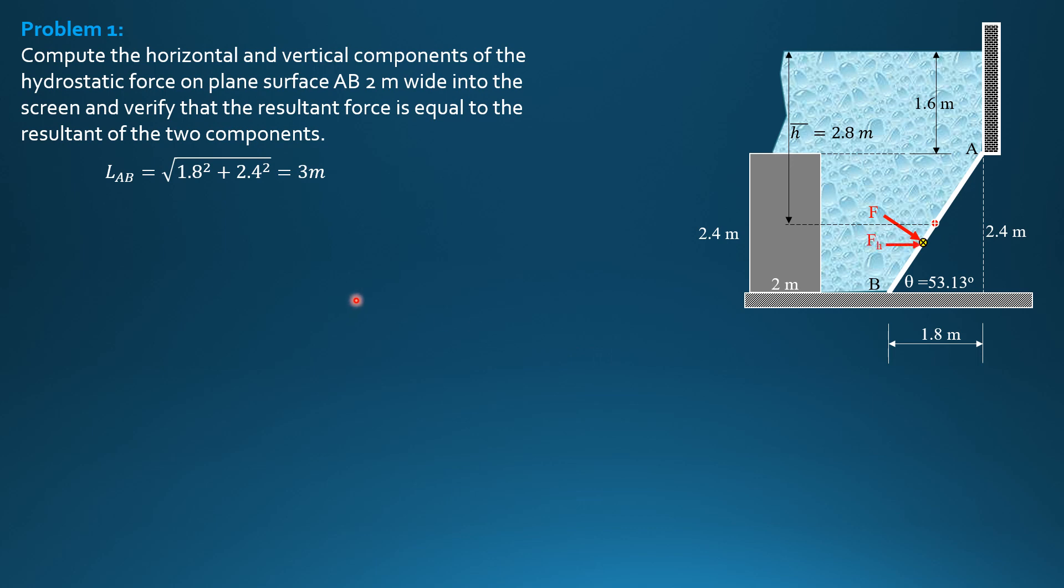So FH is specific weight of water, 9.81, times H-bar 2.8, times projected area 2 by 2.4. So that's the definition on the principles on fluid pressure on curved surfaces. So FH is equal to 131.8 kilonewtons.